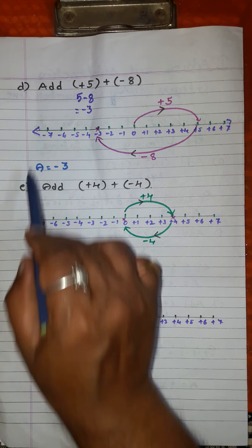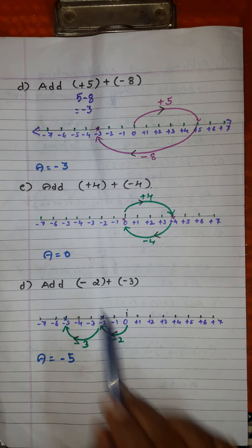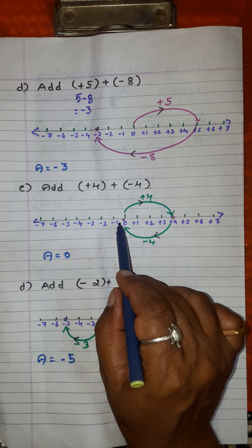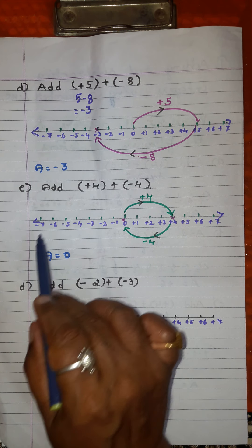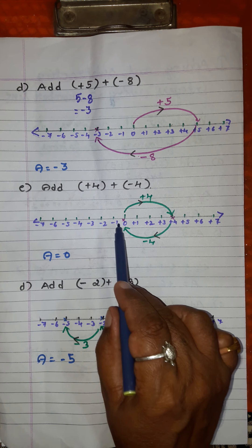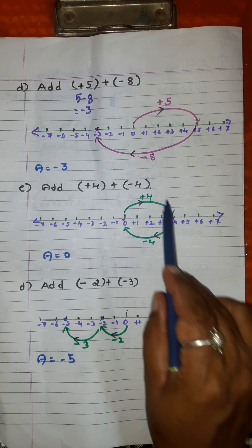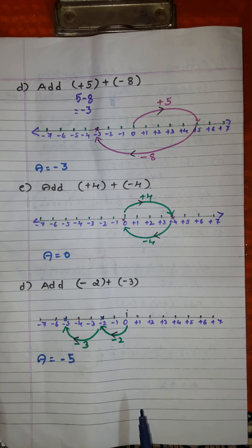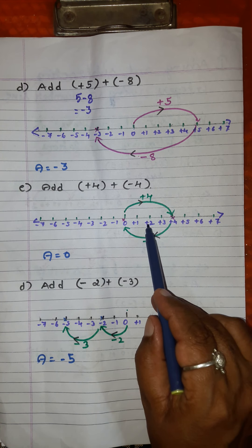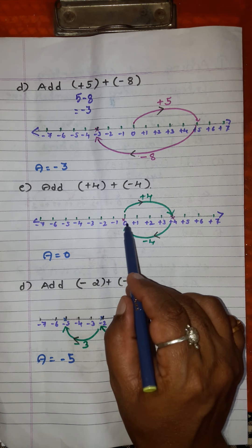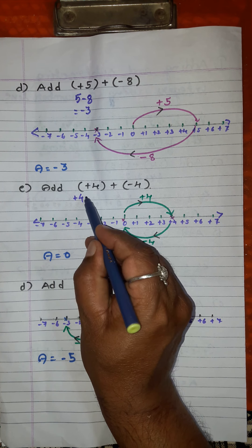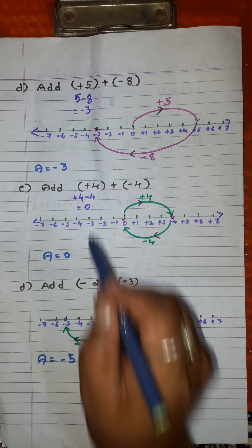Fifth problem: add plus 4 and minus 4. Again draw a number line, mark positive integers to the right of 0 and negative integers to the left of 0. Move plus 4 divisions to the right: 1, 2, 3, 4 — you arrive at this point. Then minus 4 means move leftward: 1, 2, 3, 4. Finally, where will you arrive? At 0. What is the answer? 0. Mentally: plus 4 plus into minus gives 4 minus 4 is 0.